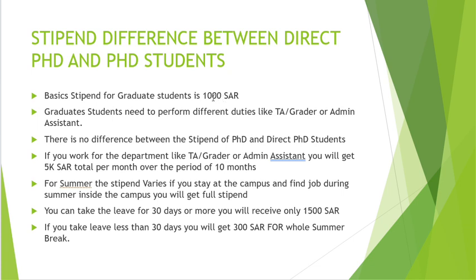If you don't get a departmental work assignment, the basic stipend is 1,000 to 1,500 Saudi Riyal. For the summer months, the stipend is only provided for 10 months; the remaining two months are summer vacation. If you take the full summer as vacation, you receive only 1,500 Saudi Riyal. However, if you take less than 30 days of leave during summer, you will receive 3,000 Saudi Riyal for those two months. Please subscribe to this channel and see you in the next video.